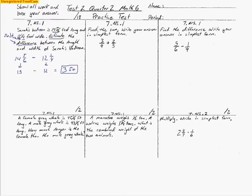Looking at our next problem, it says find the sum — so now we're not approximating, we're coming up with the exact answer, written in simplest form. We need a common denominator. On the 3 fourths I'll multiply by 5 fifths, and on the other fraction I'll multiply by 4 fourths. The factors of 4 are two 2's, and 5 only has 5 and 1, so each fraction gets the factor it's missing. Multiplying across gives us 15 twentieths plus 8 twentieths.